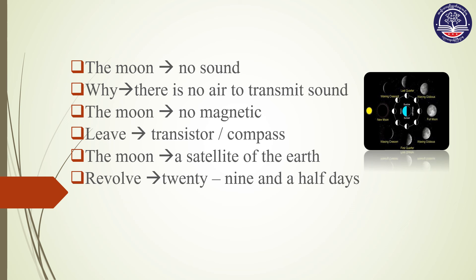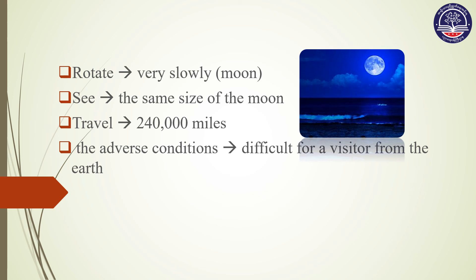The moon is a satellite of the Earth, revolving around the Earth every 29 days. The moon rotates, but it turns so slowly that the same side of the moon is always visible from Earth. To get to the moon you will have to travel 240,000 miles. That is about the same as cycling around the equator 10 times.